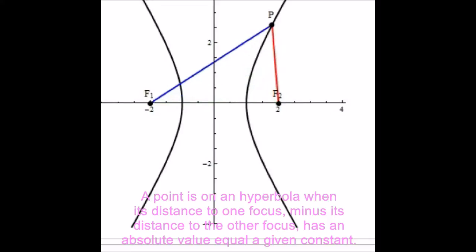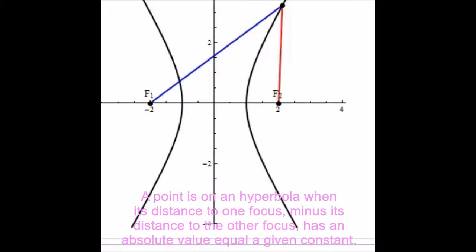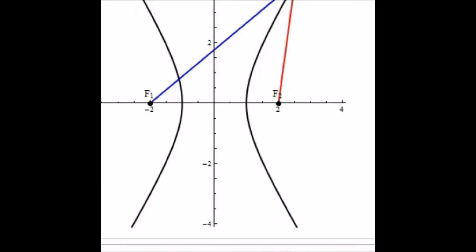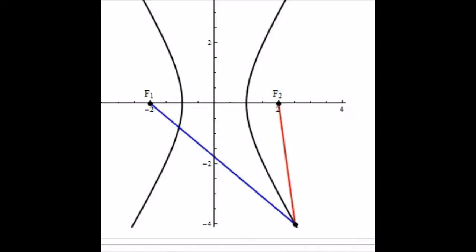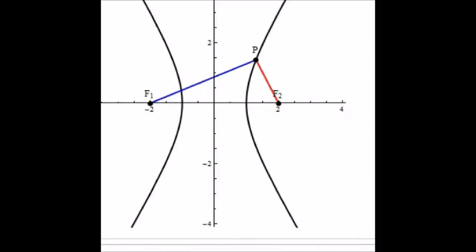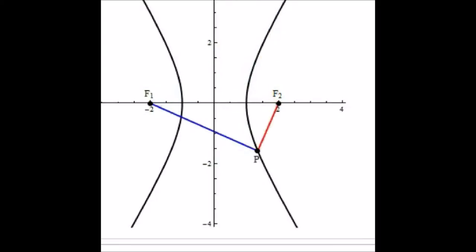You can see here that the blue length is longer. As we change the position of point P, the blue length is getting longer and longer, but the red length is growing in a similar way, so the difference between the two lengths remains the same. And that's the definition of a hyperbola.